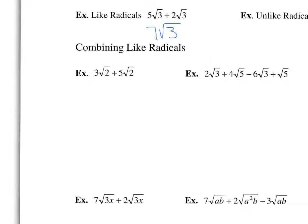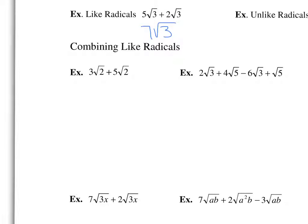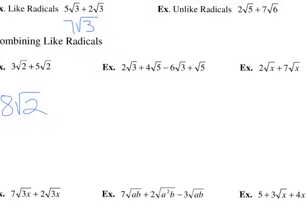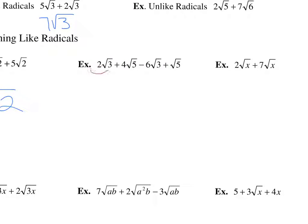We're going to combine some like radicals. We have 3 square root of 2 plus 5 square root of 2. These are like radicals because they both have square root of 2. To combine them, we just add the coefficients: 3 plus 5 is 8, and the radical stays the same. In another example, we have 2 square root of 3 and negative 6 square root of 3. Adding 2 and negative 6 gives negative 4 square root of 3. We also have 4 square root of 5 and another square root of 5, which has an invisible coefficient of 1, so 4 plus 1 gives us 5 square root of 5.